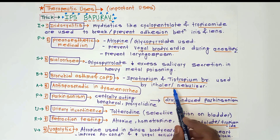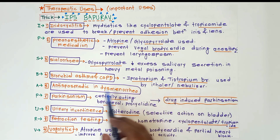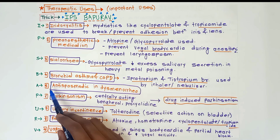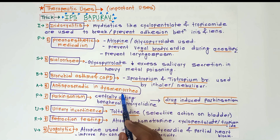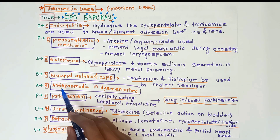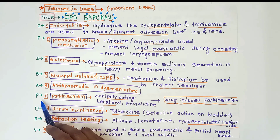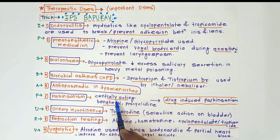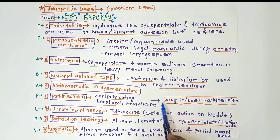For antispasmodic use in dysmenorrhea, these drugs are used as antispasmodics. In parkinsonism, centrally acting drugs are used — benzhexol and procyclidine — which are used specifically in drug-induced parkinsonism.